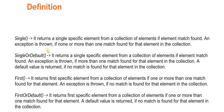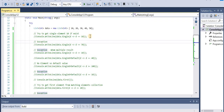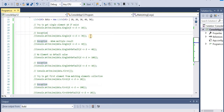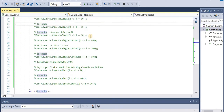An exception is thrown if none or more than one match is found for that element in the collection. Let's break this definition into different parts: it returns a single specific element from a collection of elements if the element matches. Let's quickly flip to Visual Studio - this is a console application where we'll see the usage of all the LINQ queries.